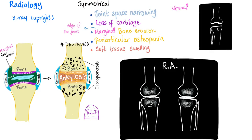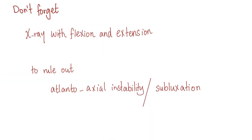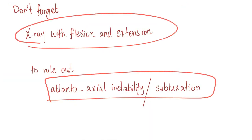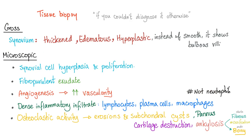On X-ray, findings are symmetrical. If atlanto-axial subluxation is suspected, order X-ray of the cervical spine with flexion and extension views. Tissue biopsy is the most accurate test, although it is rarely performed.